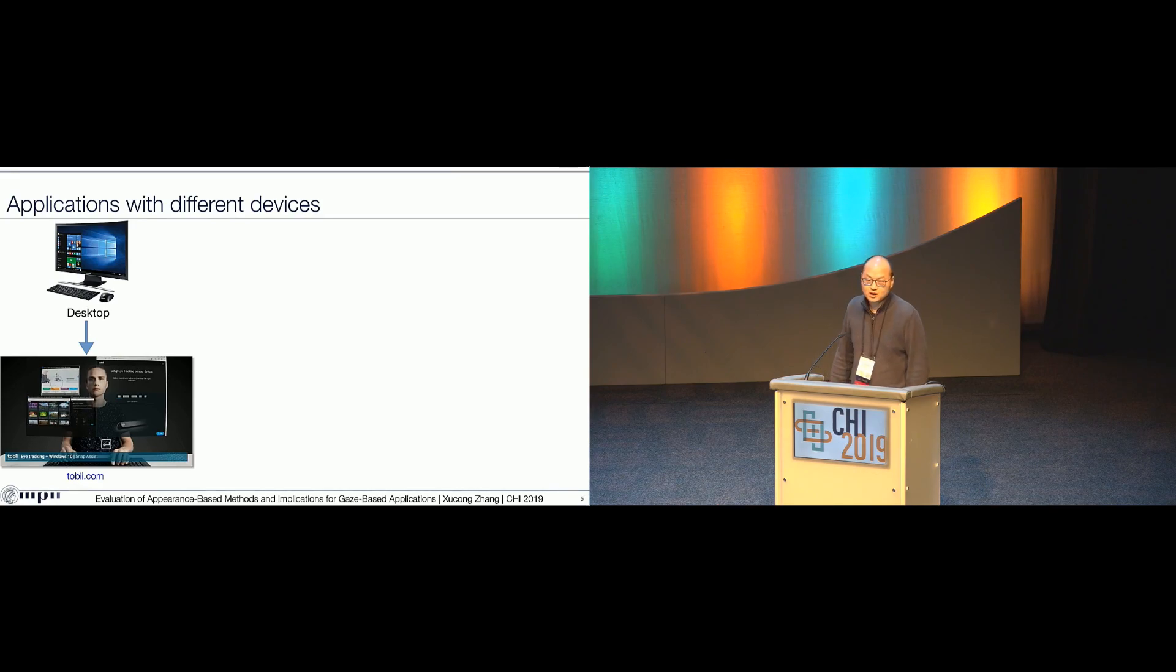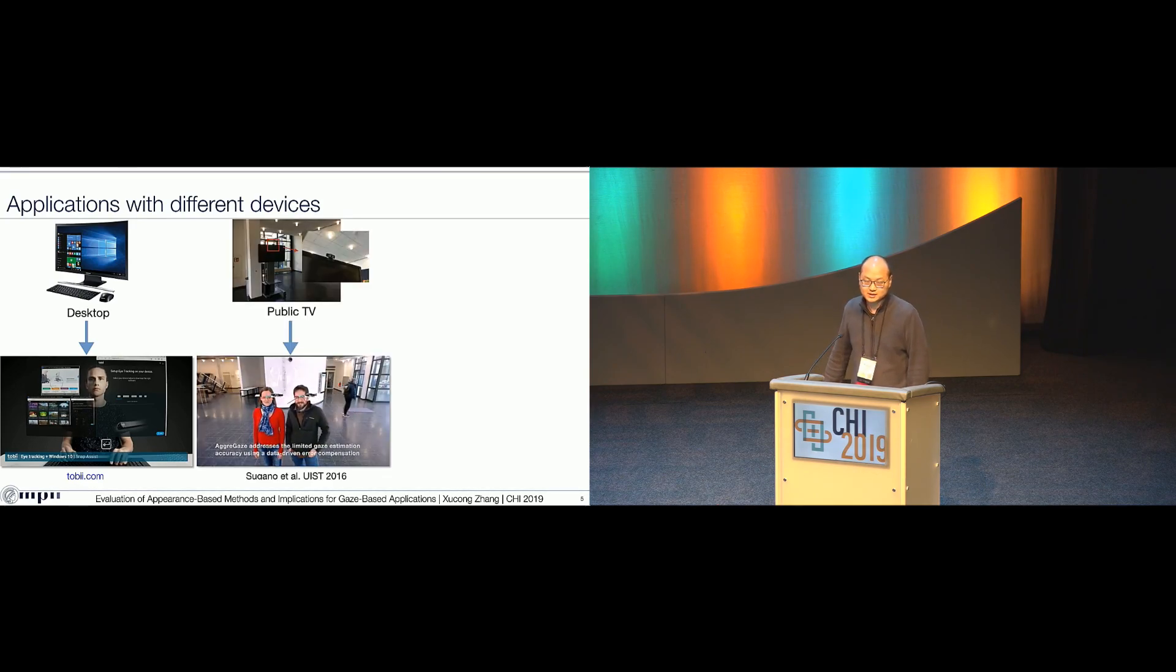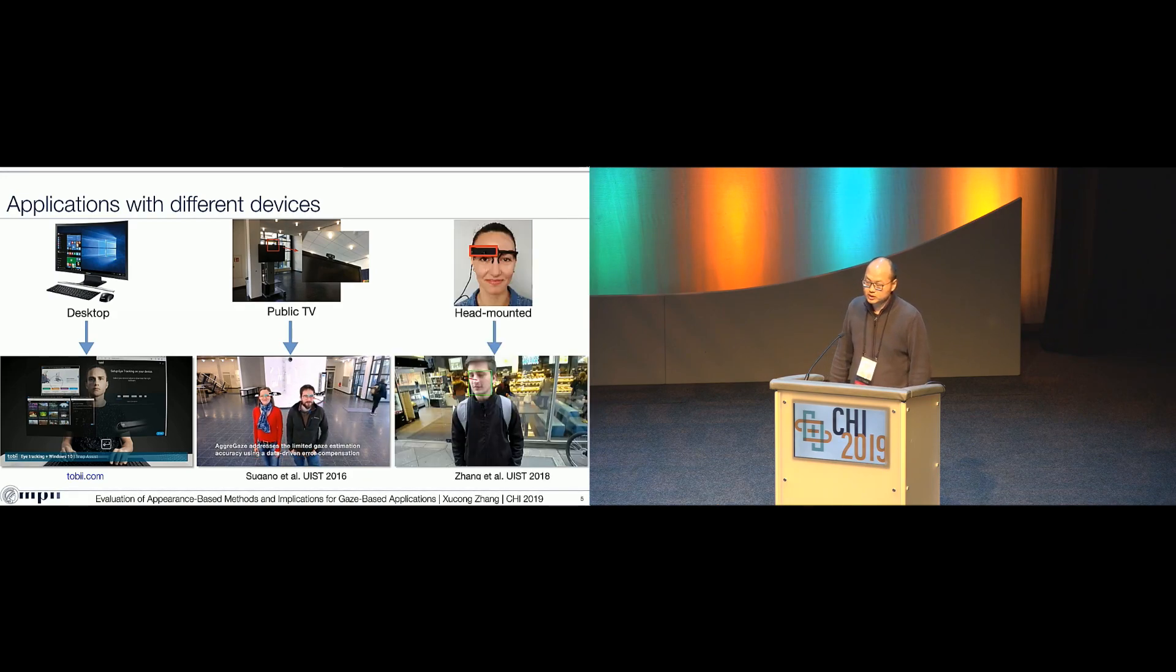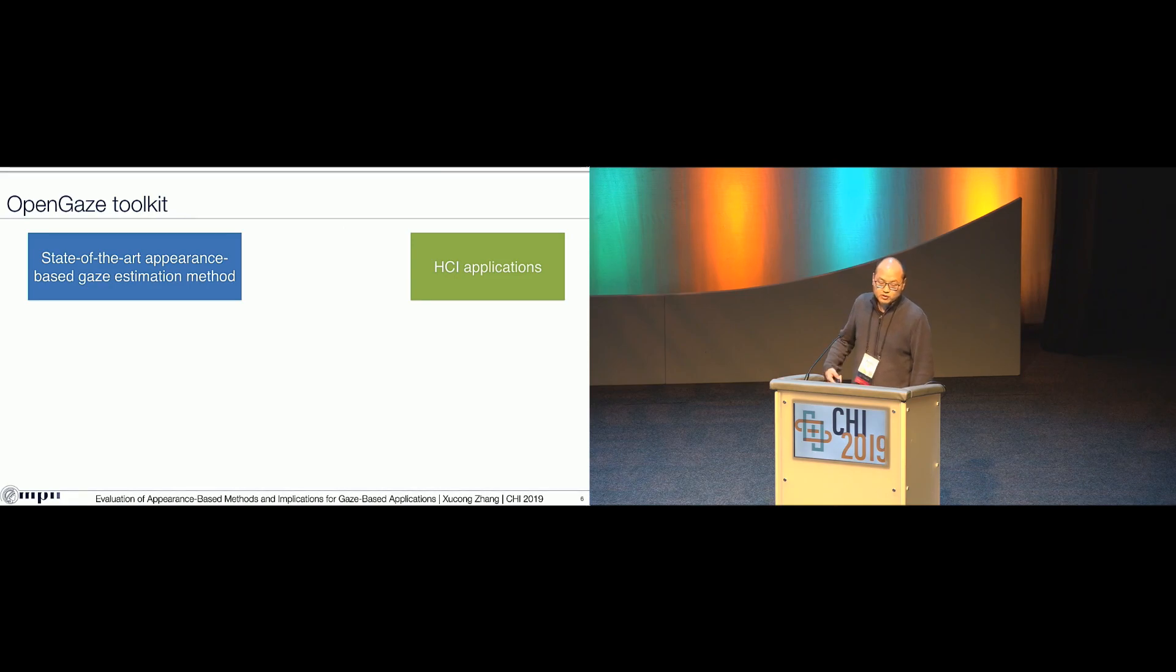For example, in public display settings where you have a webcam on top of the public display. And it can even work with a head-mounted device to estimate the second-person gaze. This kind of method can work in real-world settings and outdoor environments. Unfortunately, most of our current state-of-the-art appearance-based gaze estimation heavily relies on computer vision and machine learning techniques, so it's not accessible or ready for HCI applications.